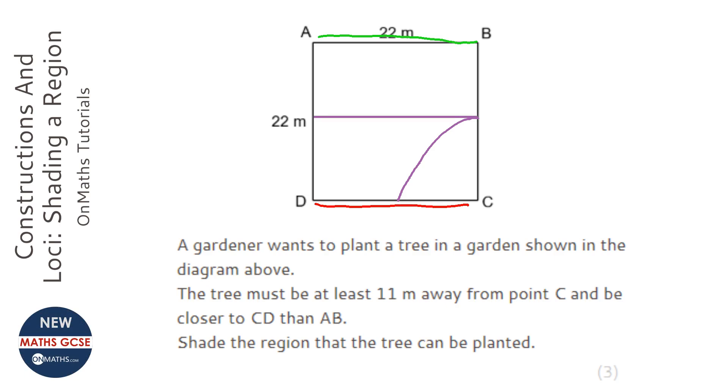It's asked us to shade in the region, and normally you'll also be asked to show the region with the letter R. That means the tree can be planted anywhere there because all of that area is closer towards CD but not too close to C.